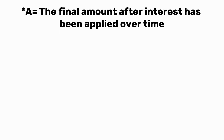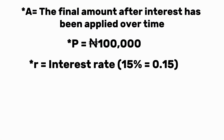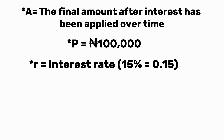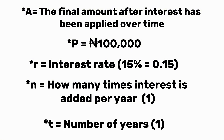A is how much you will have in the future. P is your starting money, which is 100,000. R is the interest rate — for this video we are using 15%. N is how many times the interest is added per year; let's use 1. And T is how many years you keep the money.